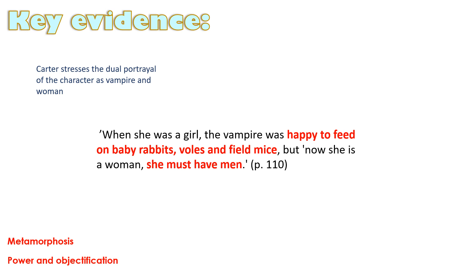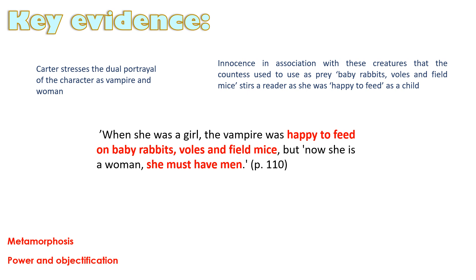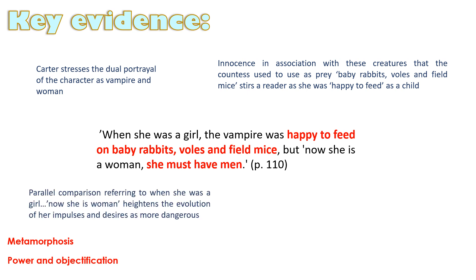There is a battle within for which one will survive. Innocence is totally assumed in usual terms with femininity, but in this story the female character is the powerful and evil force — killing innocent creatures for her own gratification. The image of baby rabbits, voles and field mice strikes as a notion of freedom that she's crippling. The parallel comparison of 'when she was a girl' to 'now she is a woman' heightens this metamorphosis, showing her impulses getting greater and greater, her desires becoming more dangerous.